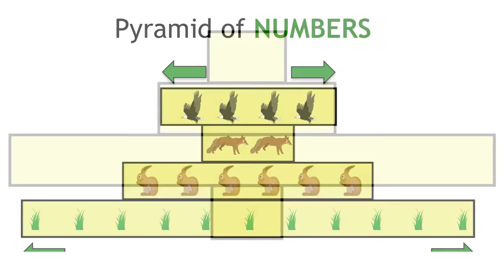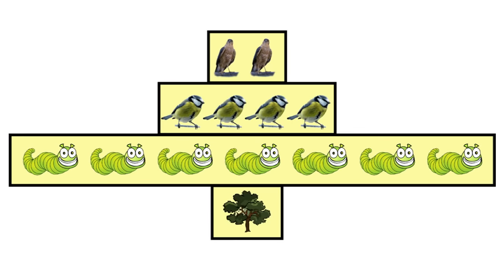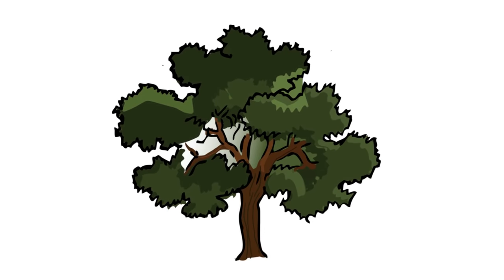Pyramids of numbers can end up looking a bit wonky. For example, if one primary producer can feed lots of primary consumers. Like an oak tree, which feeds lots and lots of little caterpillars.